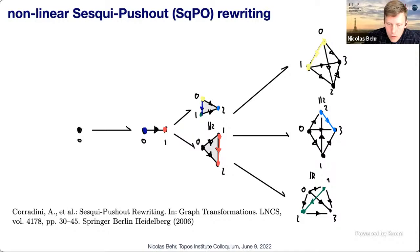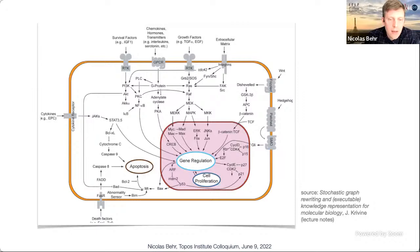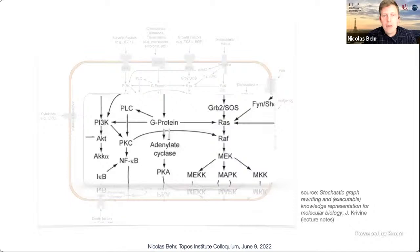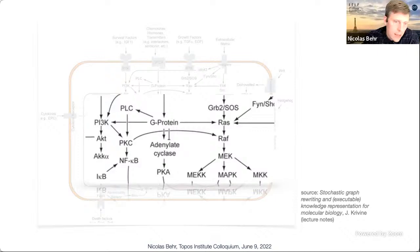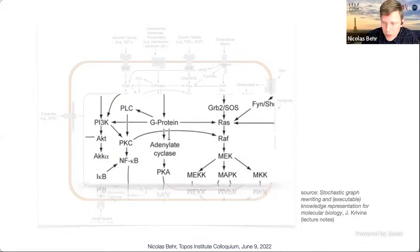The absolute main motivation for compositional rewriting theory is studying complex dynamical systems such as in biology. These systems have an enormous number of possible macromolecules or agents that can interact. You could model this with a Petri net, but in signaling pathways you might easily have 10^22 kinds of tokens — let alone distributions of occupation numbers. This is simply completely intractable.